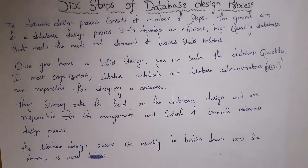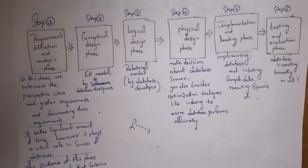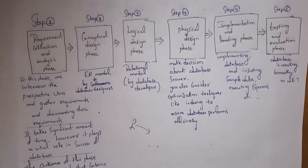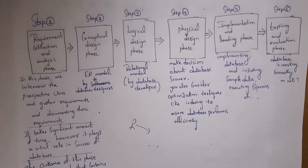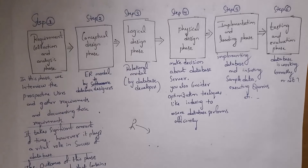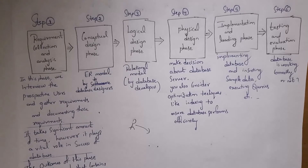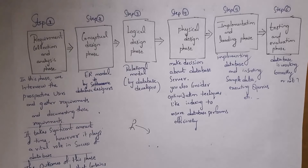Step one is the requirement collection and analysis phase. Before designing any database, we first need to gather requirements. For example, consider a college principal who came to a software company to design a college database. We need to collect requirements from him — like how many tables he wants, what are the frequently visited tables, what are the relationships between tables, and so on.